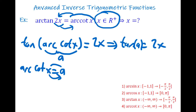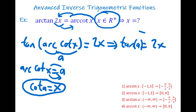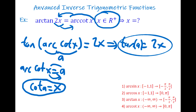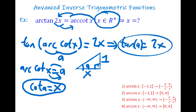Since arccotan(x) = a, switching gives cotangent a = x. So we have two equations: tangent a = 2x and cotangent a = x. Draw a right triangle with angle a. If cotangent a = x, then adjacent = x and opposite = 1. From the triangle, tangent a = 1/x.